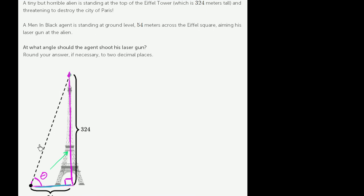So what trig function deals with opposite and adjacent? To remind ourselves, we can write SOH-CAH-TOA. Sine is opposite over hypotenuse. Cosine is adjacent over hypotenuse. Tangent is opposite over adjacent.